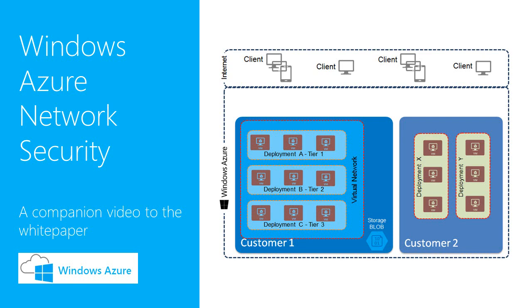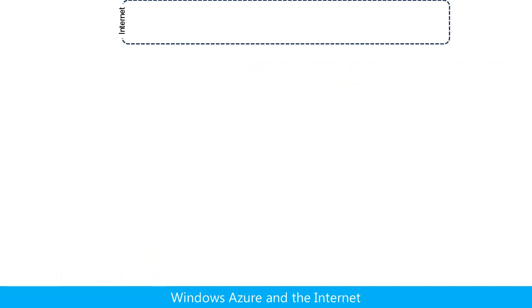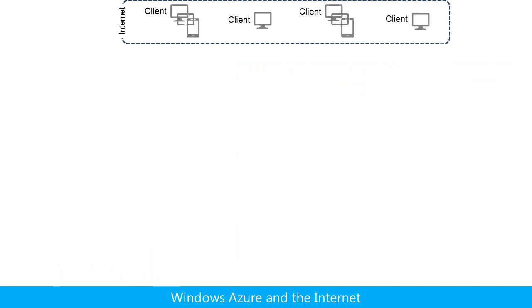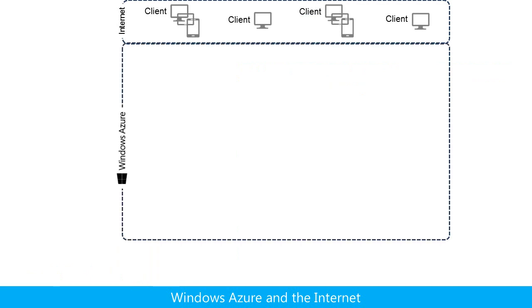Let's take a look at some of the ways that Windows Azure provides network security. We start with the Internet, which contains a set of client computers. Some of these computers are clients, some are administrators, but some could be malicious users. Next, we add Windows Azure.